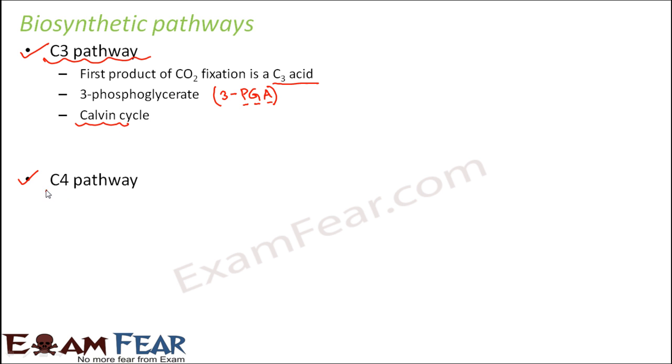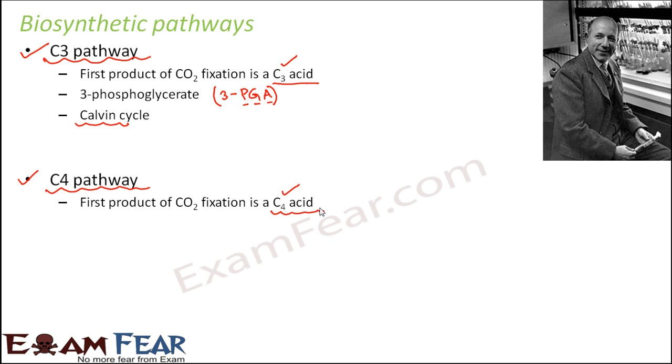The next biosynthetic pathway is a C4 pathway. Now it is very obvious from the name, so there it was C3 because a three carbon acid was formed. So here a four carbon acid is formed. So the first product is an acid which has four carbon atoms in it. So what is that acid? That is oxaloacetic acid which is often abbreviated as OAA. So oxaloacetic acid has four carbons in it. So that is the first stable product of a C4 pathway.